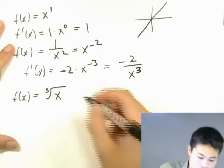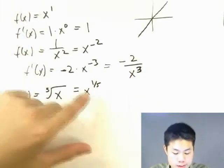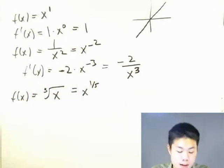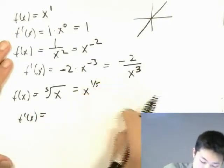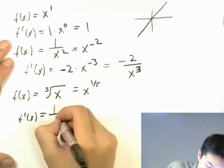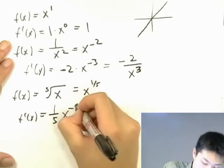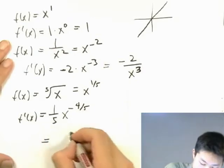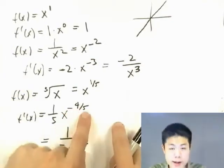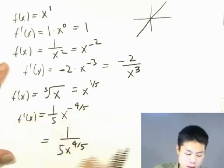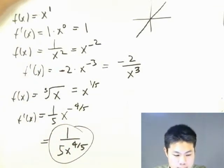What about f of x equals the fifth root of x? We rewrite this as x raised to the 1 fifth. The derivative is: bring down the power 1 over 5, times x raised to 1 fifth minus 1, which equals negative 4 fifths. So the derivative is 1 over 5 times x to the negative 4 fifths, which we write as 1 over 5 times x to the 4 fifths.